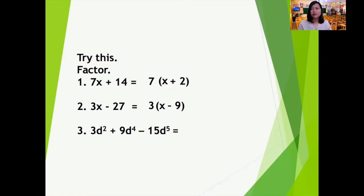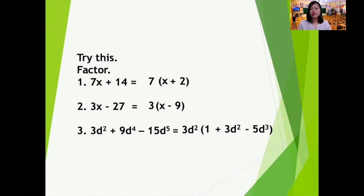And number three: the greatest common factor is 3d squared. Dividing each term of the polynomial by 3d squared, we have: 3d squared divided by 3d squared is 1; 9d raised to the 4th divided by 3d squared is 3d squared; and negative 15d raised to the 5th divided by 3d squared is negative 5d cubed.